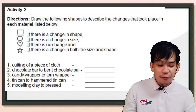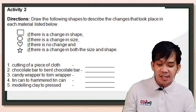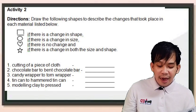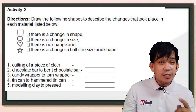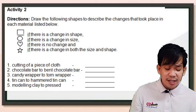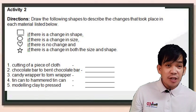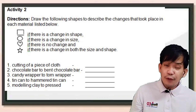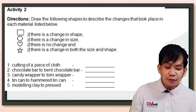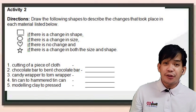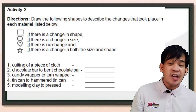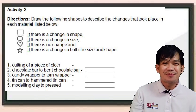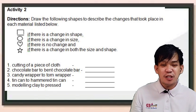Let's have activity number two. The direction is you will just draw the following shapes to describe the changes that took place in each material. For every material, number one to five — if after doing the changes the change is in shape, you will draw a square. If change in size, a circle. If there is no change, you will draw a heart. And if there is a change in both the size and shape, draw a star — because sometimes after doing the different actions, dalawa yung nagbabago: yung size niya at yung shape niya, so take note, star ang ilalagay nyo. Congratulations for doing activity two.